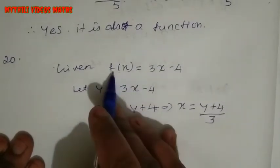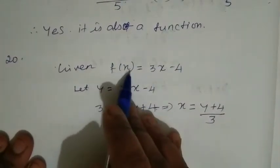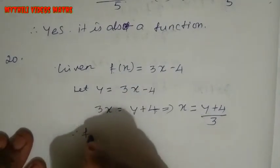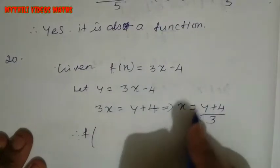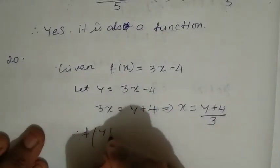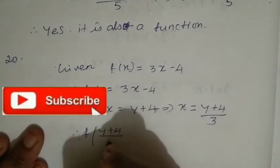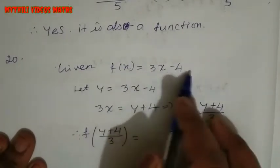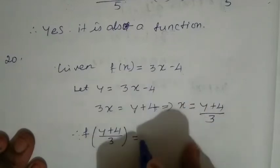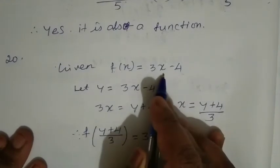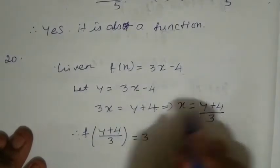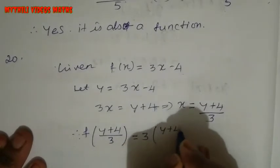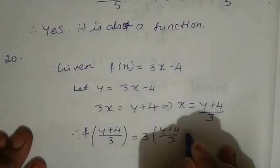Now what we will do: in the f(x) function, substitute y. We substitute the x value — so writing f of x, I am writing (y + 4) / 3. In the equation, we apply this fully. So 3 into (y + 4) / 3, instead of x I am substituting this value.